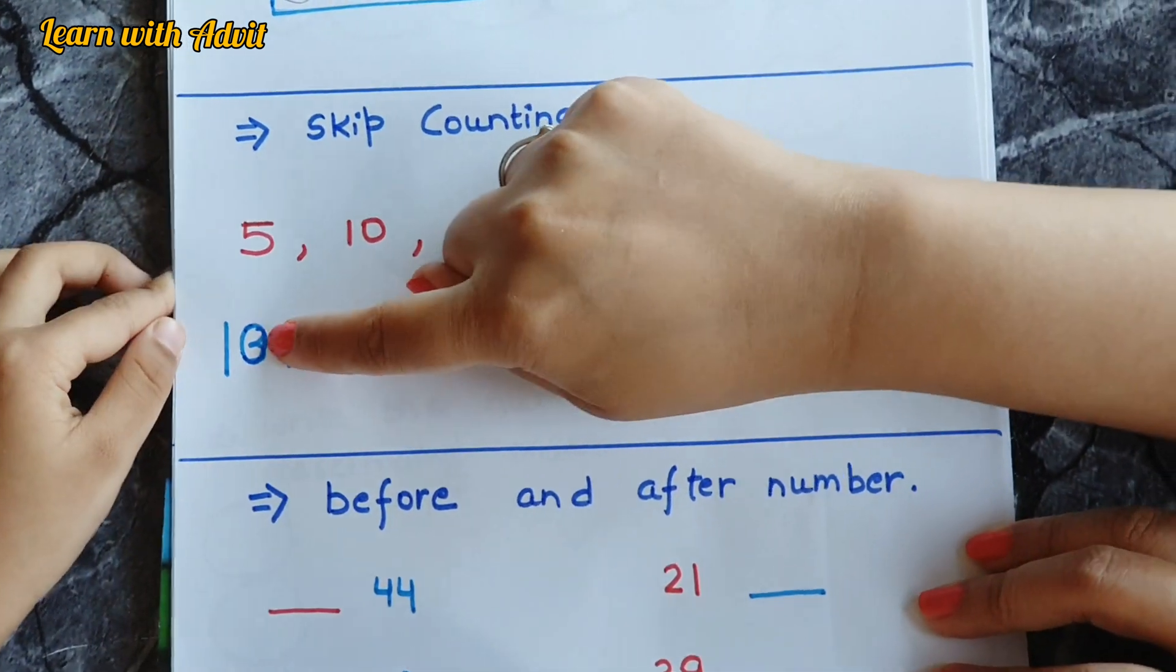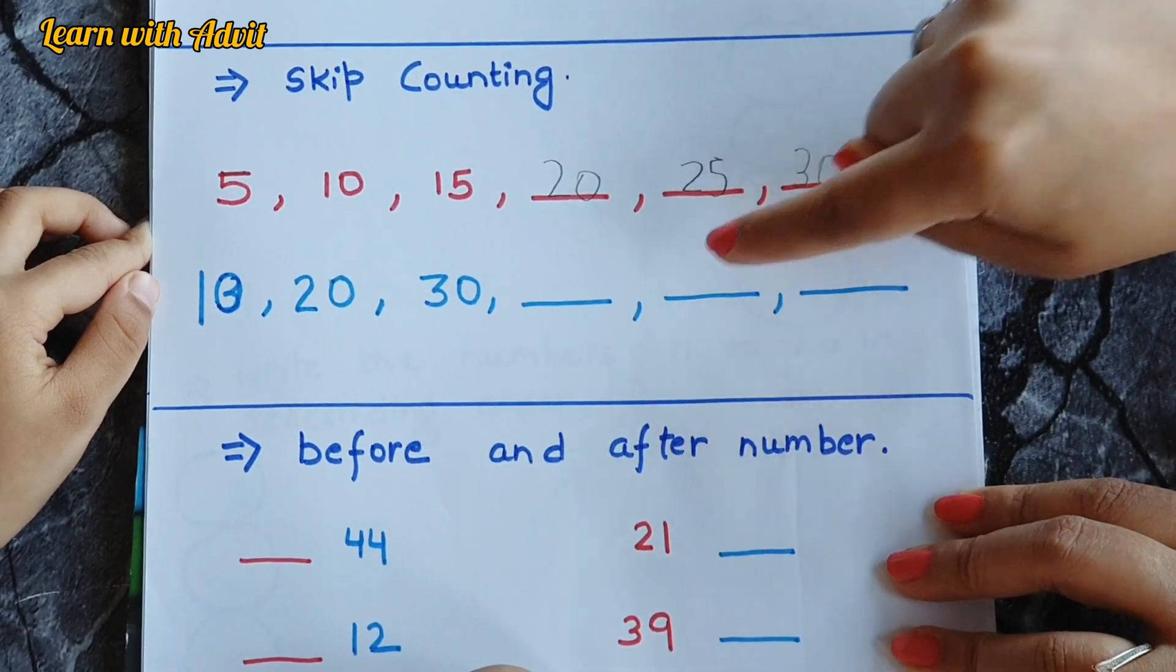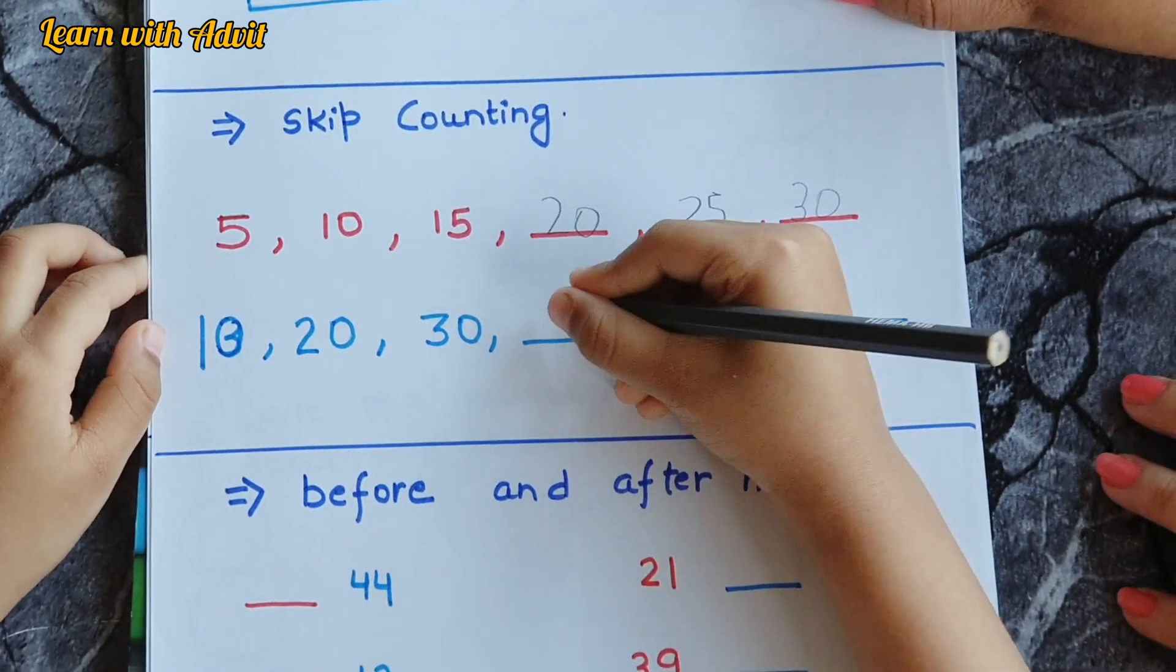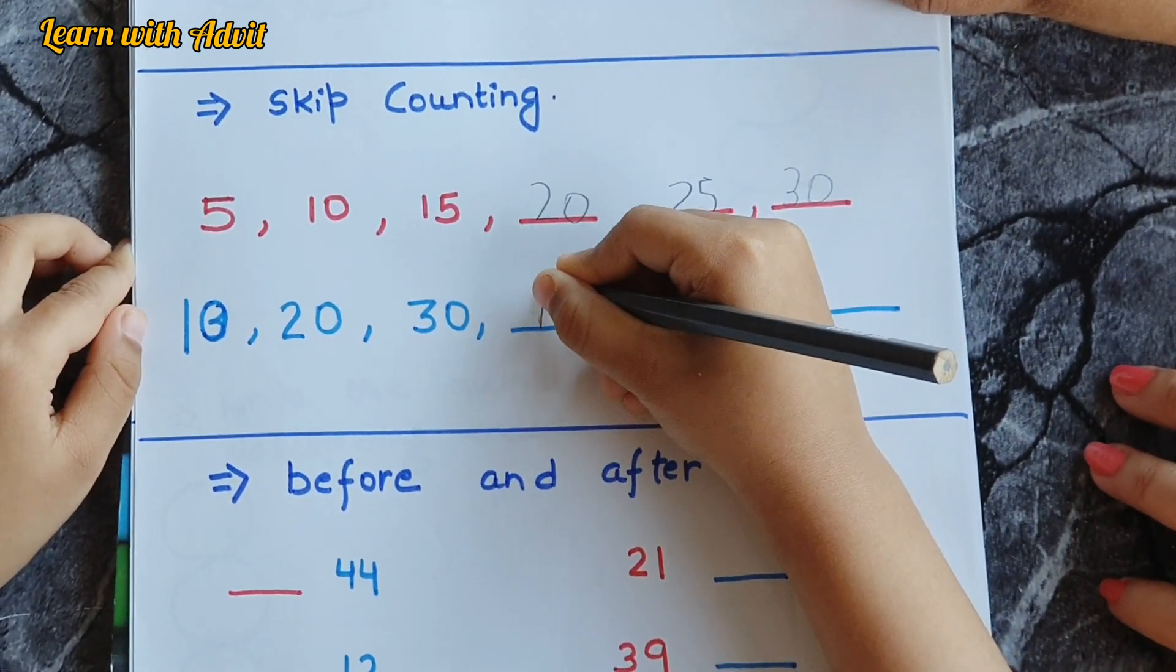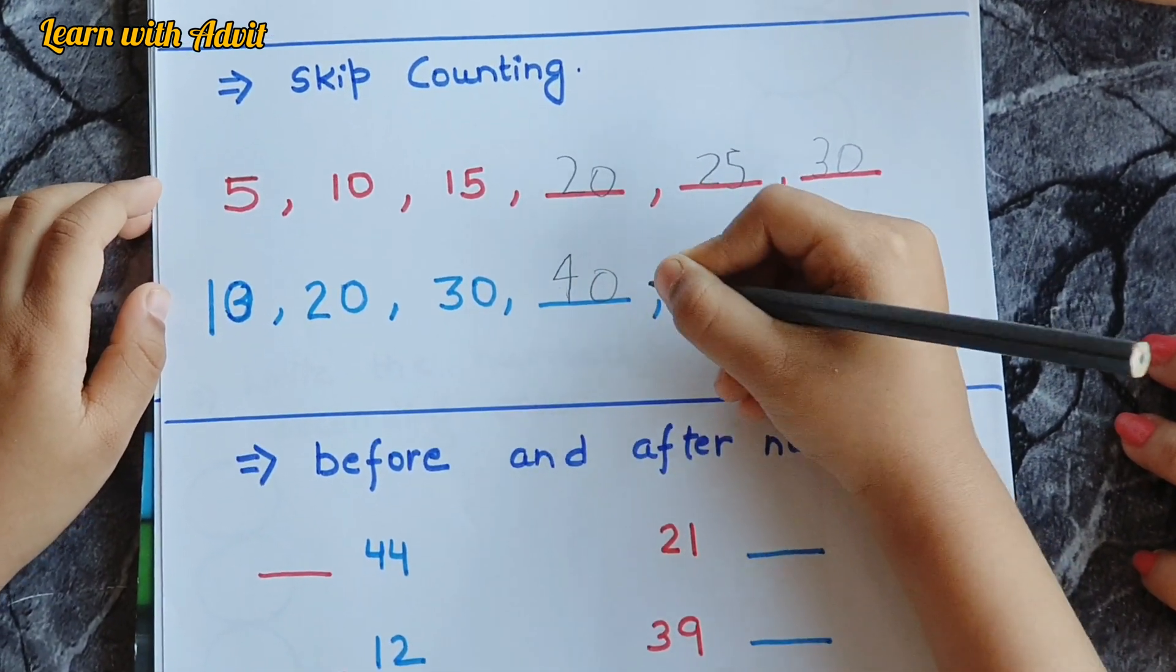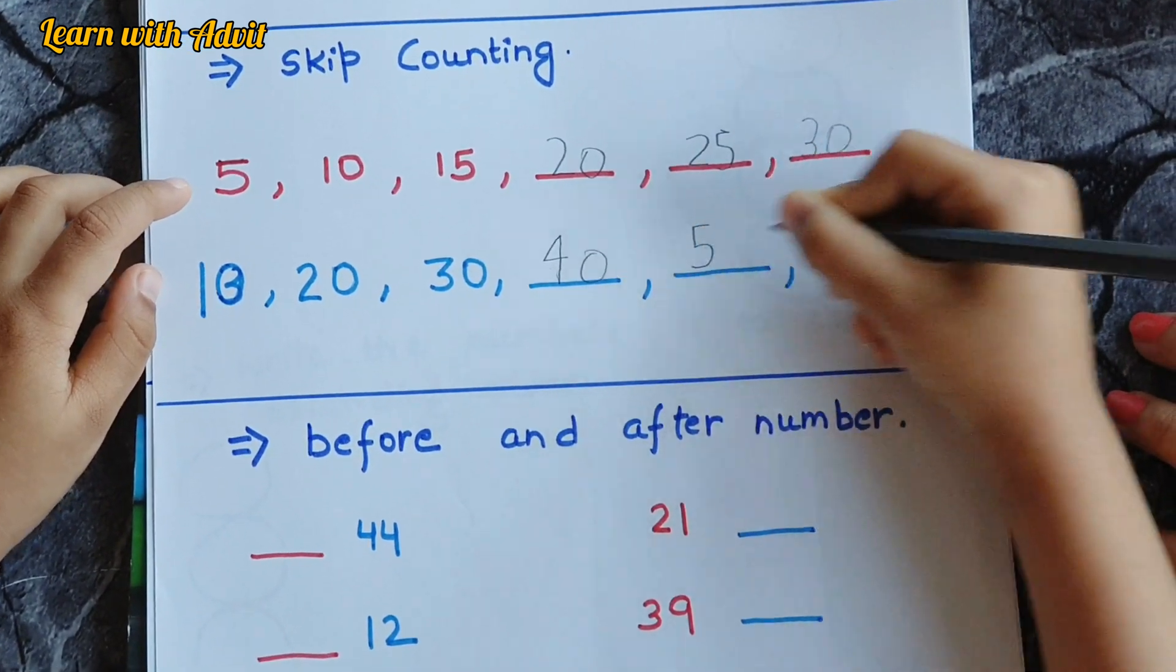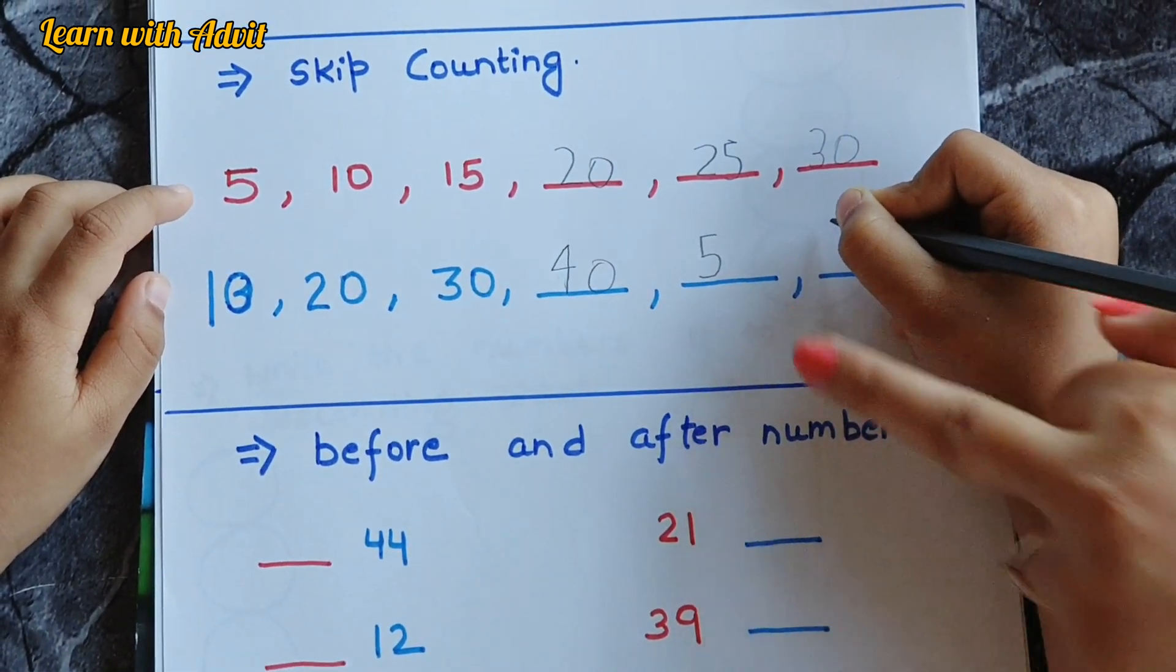This is for ten. Ten, twenty, thirty, forty, fifty, sixty. Write it down.